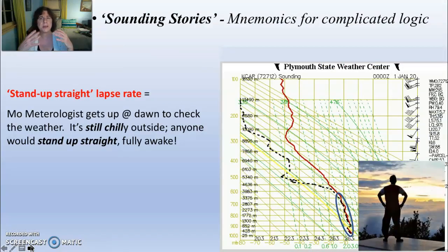When I talk about the steep lapse rate, I'm going to talk about a stand-up-straight lapse rate - I want to bring in mnemonics for you. When I talk about the gradual angle, I'm going to talk about a groggy lapse rate. I'm trying to put mnemonic stories for you so you'll start to think about cloud development and these soundings. The stand-up-straight lapse rate - I'm talking about Mo the meteorologist who gets up at dawn. It's so chilly that you would stand up straight when you went outside because it just goes right through you.